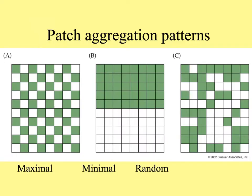Just like we talked about dispersion of individuals in ecology, aggregation patterns are important in landscape ecology. Maximal dispersion is shown where patches are not adjacent. Minimal, where they're not overlapping at all. And random — sometimes next to another patch of the same habitat, sometimes next to a different one.